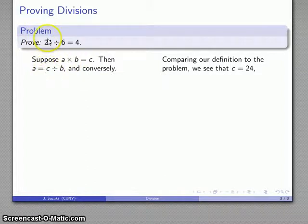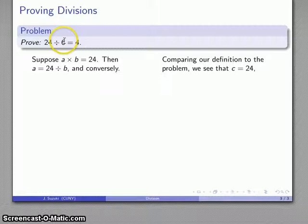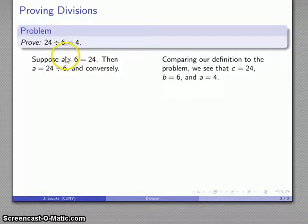So here I have c must be the same as 24 so I'll make that replacement. I have b must be the same as 6 so I'll replace that. And then a is the quotient and so I'll replace a with 4 and I'll make that replacement.